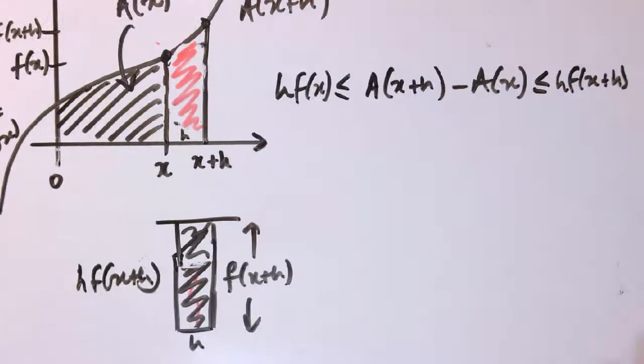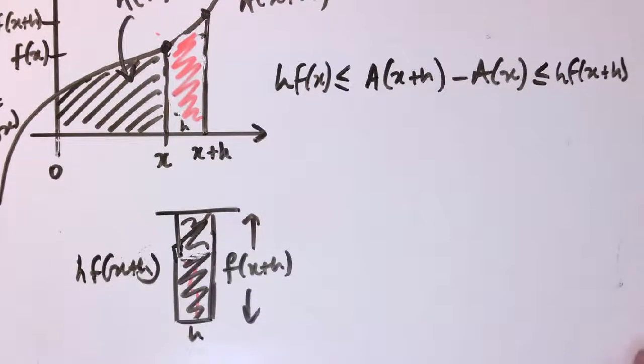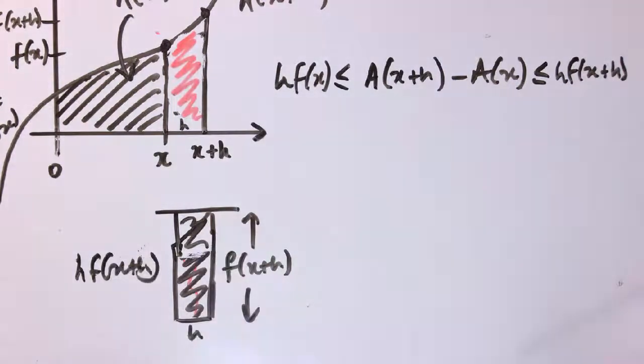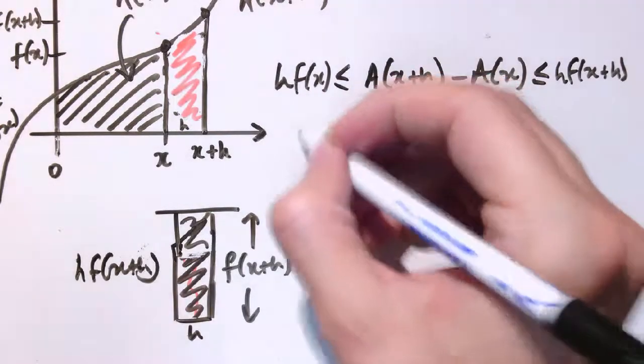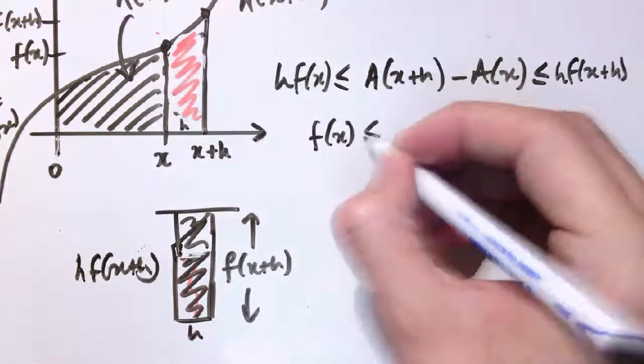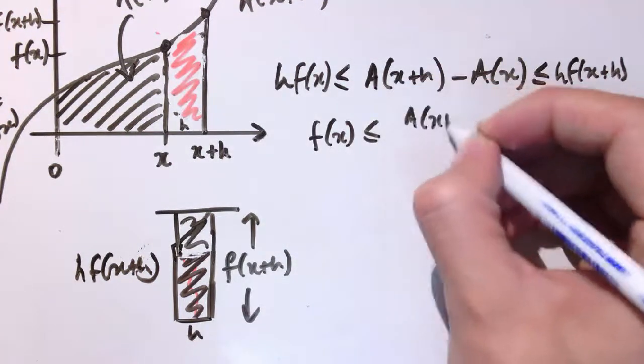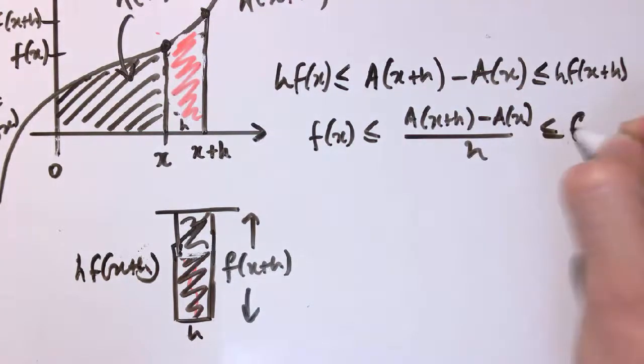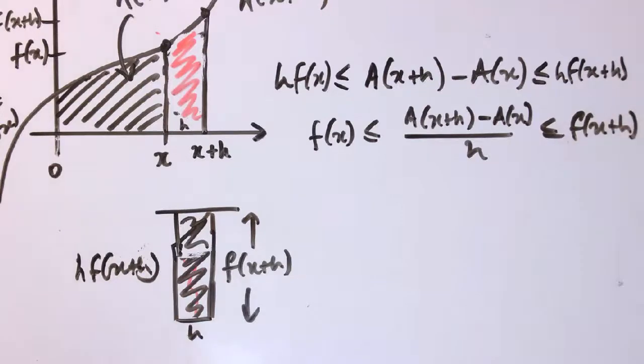So if you're following it this far, that's the hardest bit. We've enclosed this area in between these two rectangles. Right now, almost there. So what I'm going to do is take this inequality and divide it through everywhere by h. Now h is a positive number, so I'm allowed to do that without messing up the inequality. It's not going to change the signs. So I'm going to divide by h. And here, I'm going to divide by h as well. And then here, I'm going to divide by h.